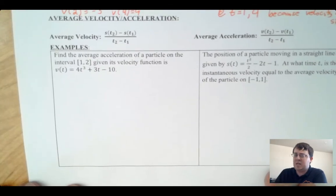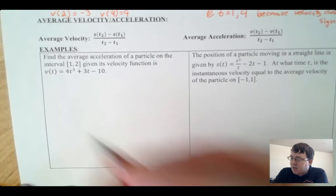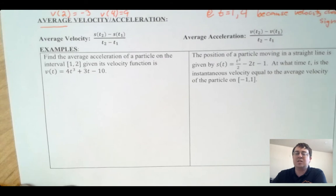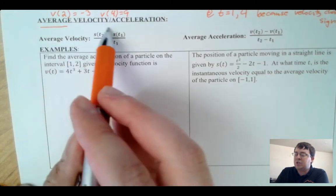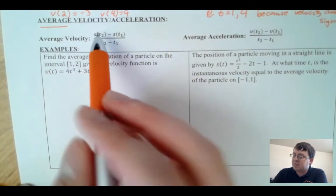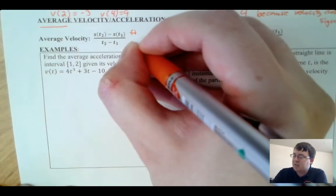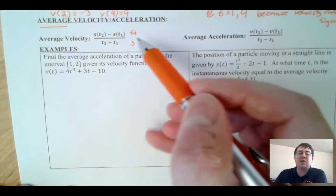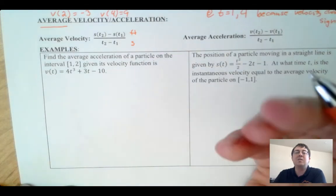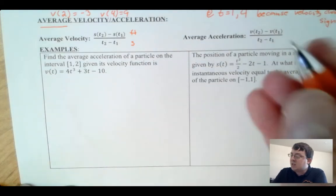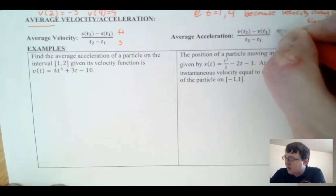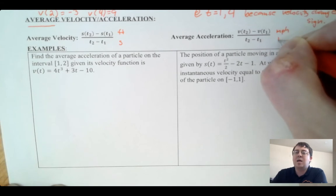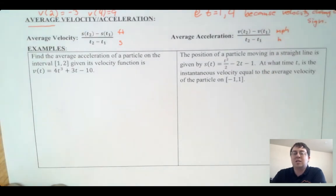Let's talk about average velocity, average acceleration, and instantaneous values, because these can be confusing. Whenever I'm asked for an average, I don't need calculus — average velocity and average acceleration are just a slope. Average velocity is a change in distance over a change in time, giving units like feet per second. Average acceleration is a change in velocity over time, giving units like miles per hour squared.